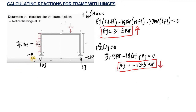Now we need to calculate AS and ES. If we take the summation of all horizontal forces equal to 0, we won't be able to solve for both AS and ES individually. So we need to use the internal hinge to find the remaining reactions. We are going to make a cut at the hinge, cutting a section at point C.